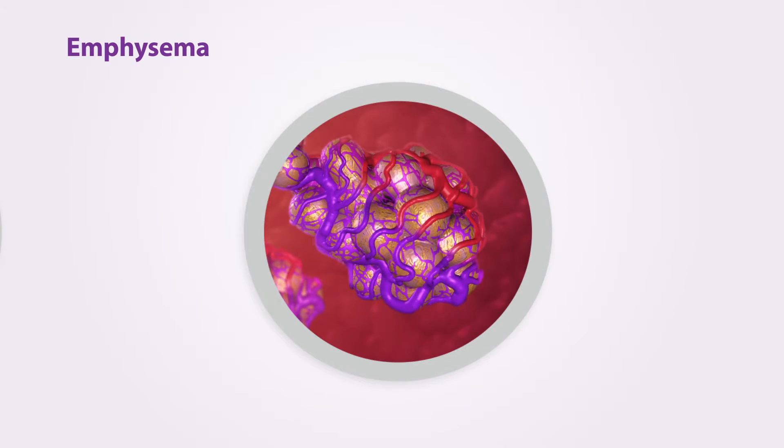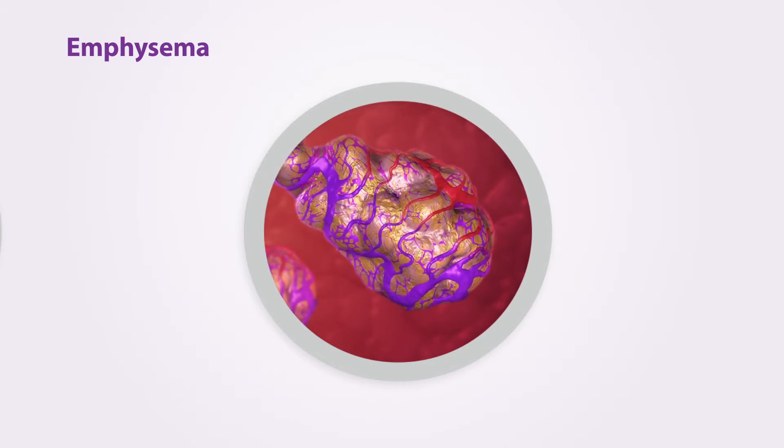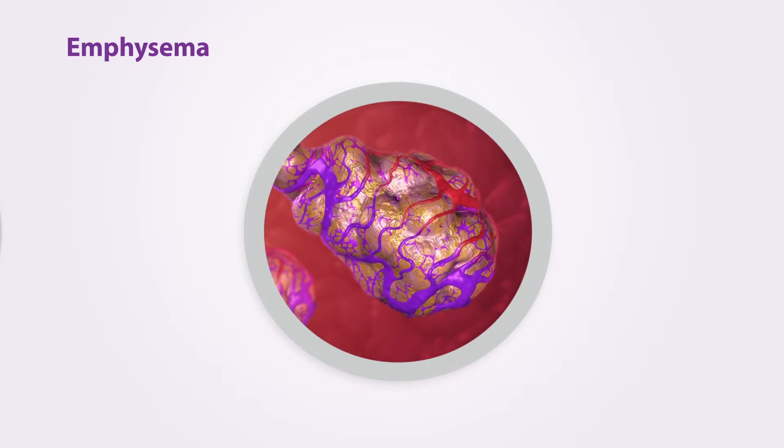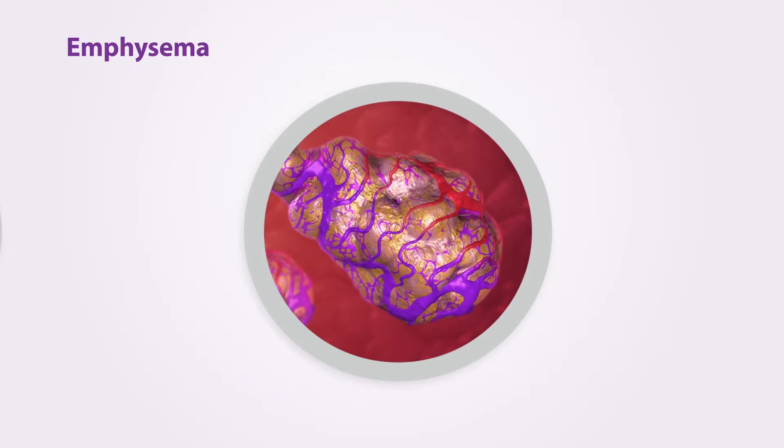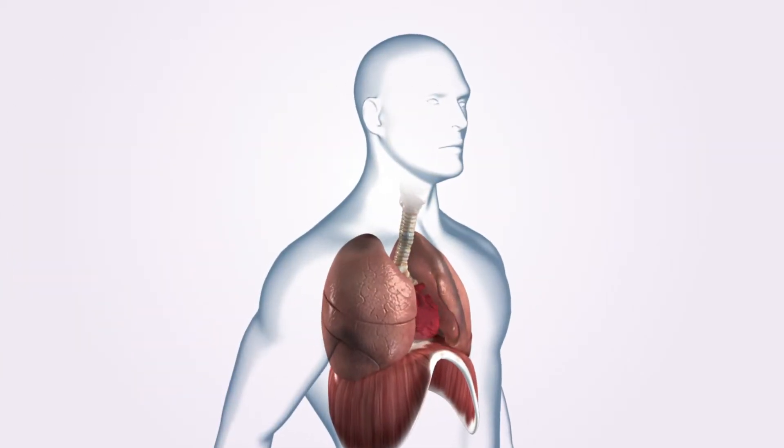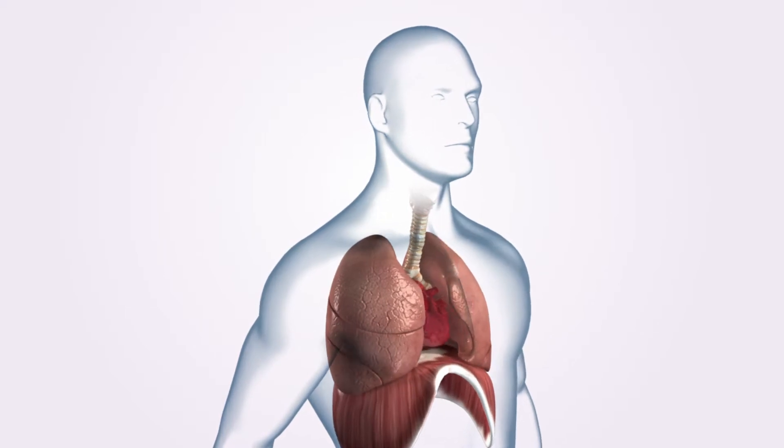Emphysema causes inflammation of the alveoli destroying active membrane and decreasing the surface area available for gas exchange. Chronic bronchitis and emphysema are two causes of chronic obstructive pulmonary disease.